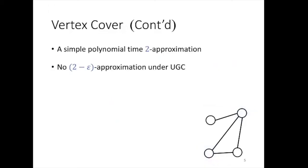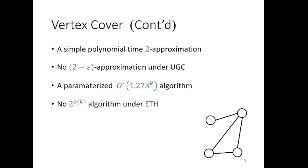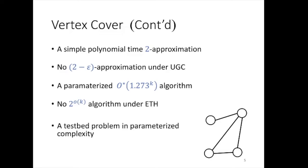There's a very simple 2-approximation algorithm for the problem, which is essentially tight — there is no (2 minus epsilon) approximation under the Unique Games Conjecture. The problem is also known to be in FPT. The best FPT algorithm has a running time of 1.273 to the power of k, there is no sub-exponential time algorithm under ETH, and the problem is a testbed problem in parameterized complexity.